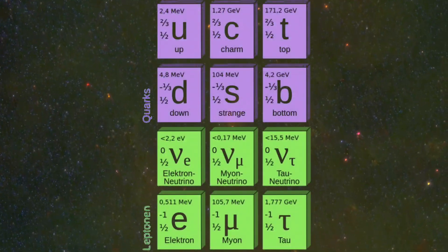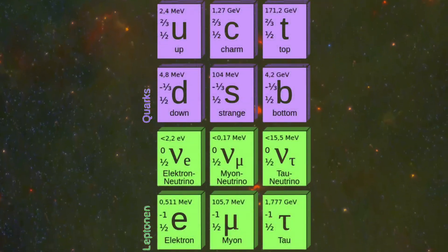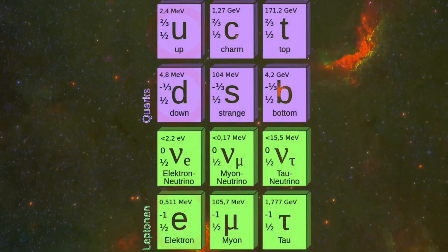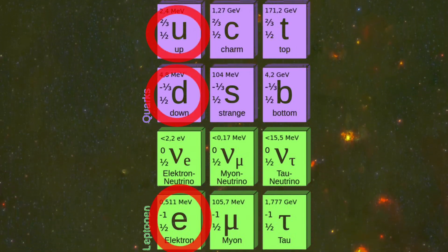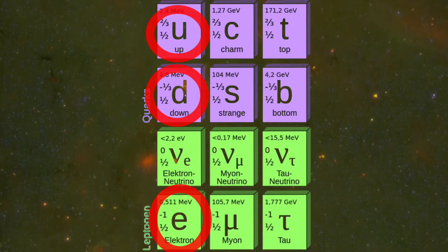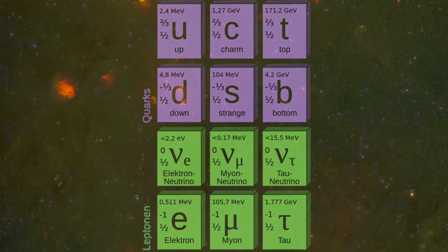Out of all these fermions, the most common particles in the universe are the electrons, up quark, and down quark. According to Professor Brian Cox, only these three particles are needed to form our cosmos.